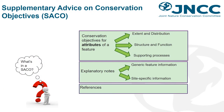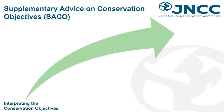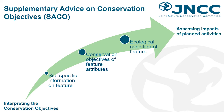The supplementary advice on conservation objectives, also known as the SACO, includes conservation objectives for attributes of a feature such as extent and distribution, structure and function and supporting processes, where explanatory notes provide generic feature information and site-specific information and detail the references that have been used. The SACO is essential reading to help interpret the conservation objectives, providing further detail and site-specific information for each feature within the site. You can use this document to learn about the features of the site and the attributes used to describe their ecological condition, which will help you assess the impacts of a planned activity on the site's features.